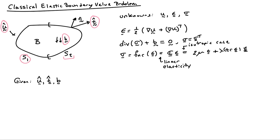So the overall statement of the boundary value problem is given u hat, t hat, and b. So given some boundary displacements, some boundary tractions, and some body forces, we want to find the displacement field u that satisfies the displacement boundary condition. So in other words, it's equal to u hat on s1.